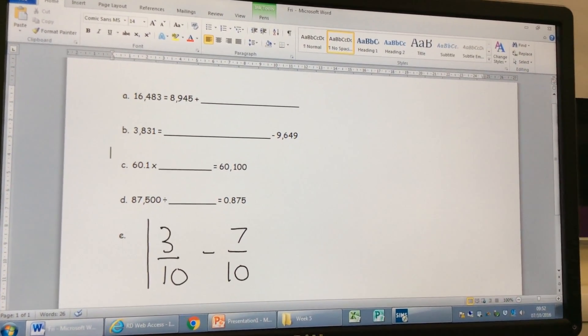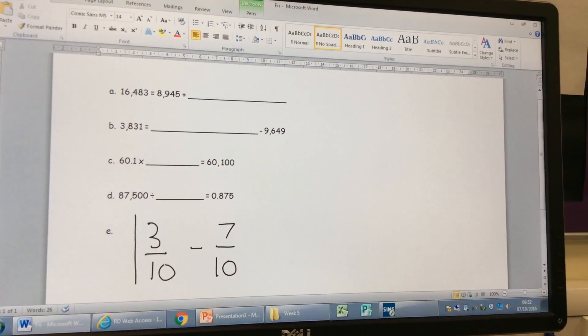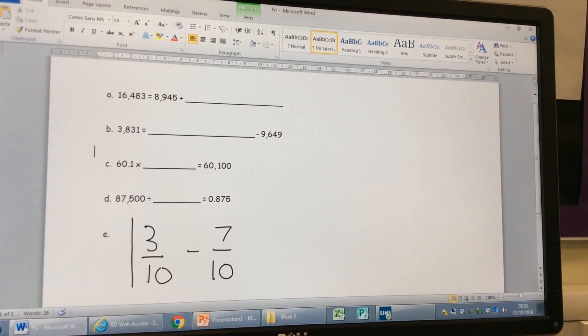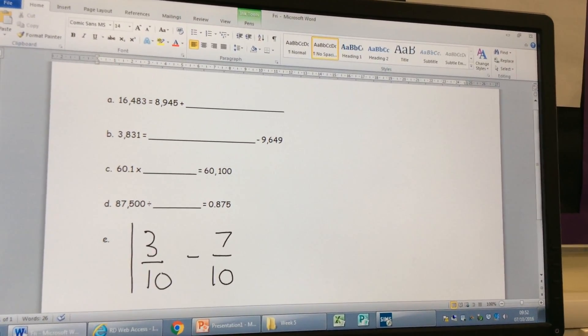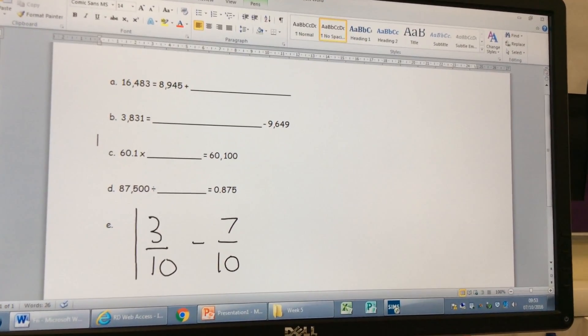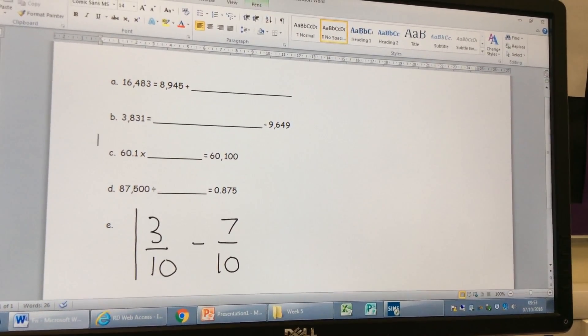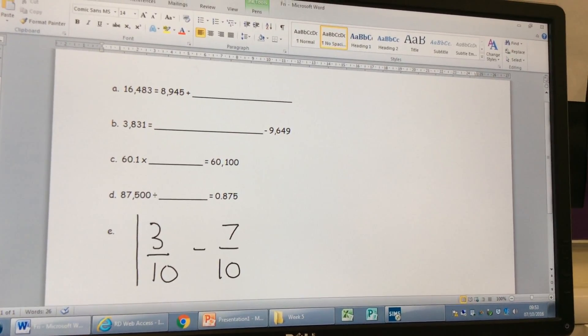Okay, let's have a look at the first one. We've got 16,483 equals 8,945 add something. Can anybody tell me what the something is? Is it a part or is it a whole? Ryan? It's a part because the 8,000 is a part and then you add another part which makes the whole addition.